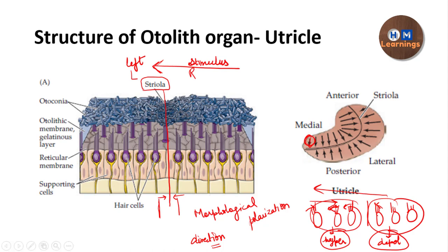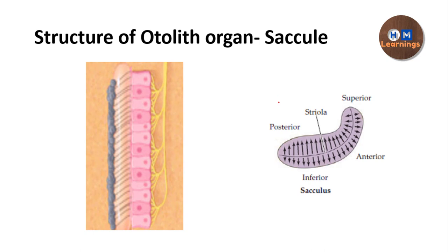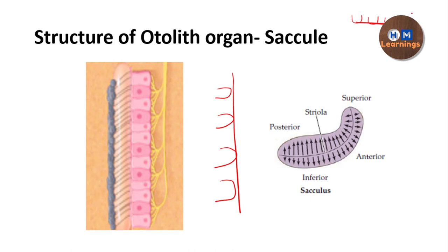Now for the saccule — the other otolith organ — the orientation is different. In the utricle, the macula is along the horizontal plane; in the saccule, it is along the vertical plane. The hair cells are arranged vertically. The same structure applies: you have a macula with stereocilia embedded in a gelatinous layer, and above that the otoconia embedded in the otolithic membrane, which increases the mass of that membrane.